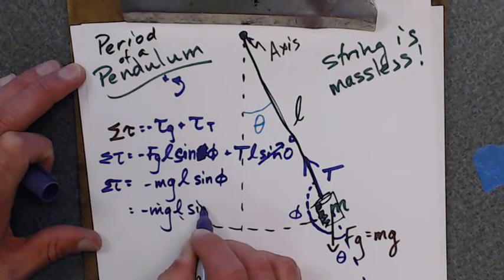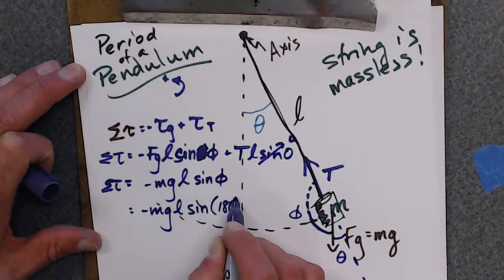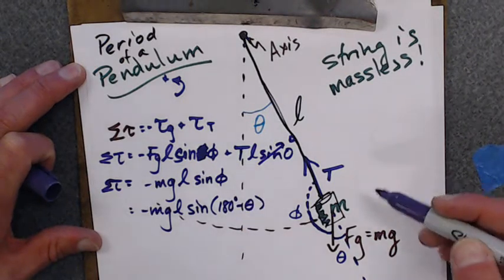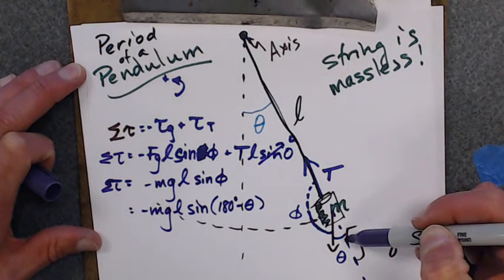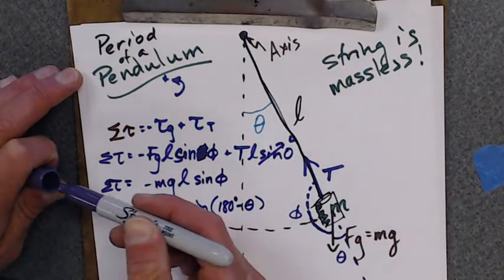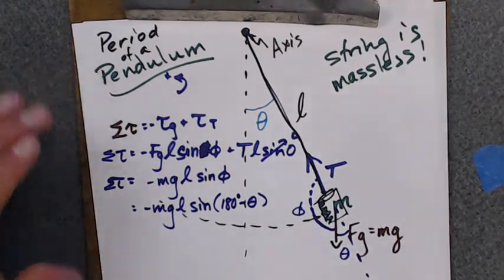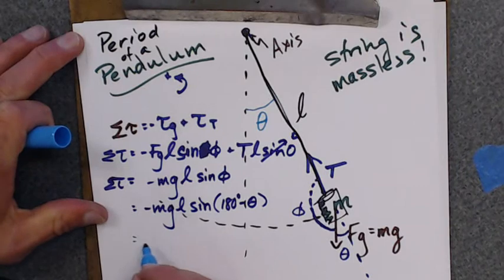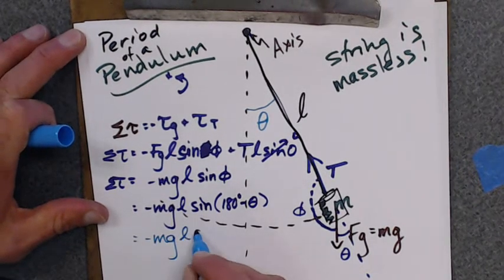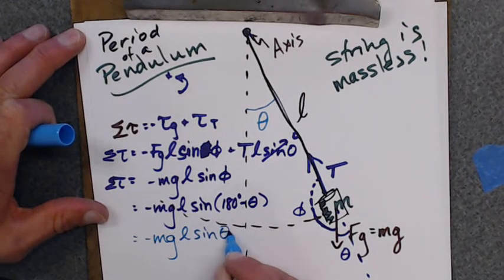This angle phi is actually 180 degrees. MgL. That phi is actually 180 minus theta, because this is 180 degrees and I'm subtracting theta. Now let's keep going.